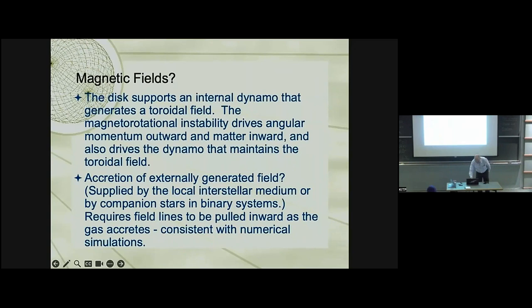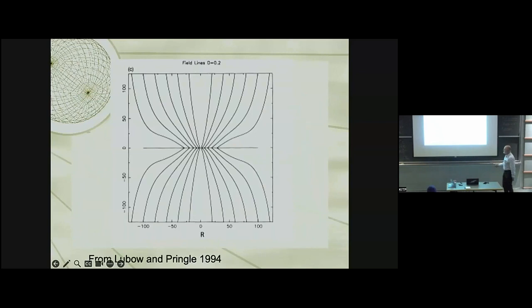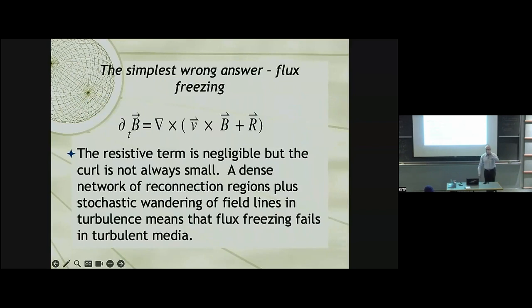The poloidal field is, we presume, accreted from the environment. Oops, and now I've gone backwards. So here's a little cartoon of a poloidal field being constricted inward as it gets accreted. And the question is, how realistic is that, and can we build models that describe that?